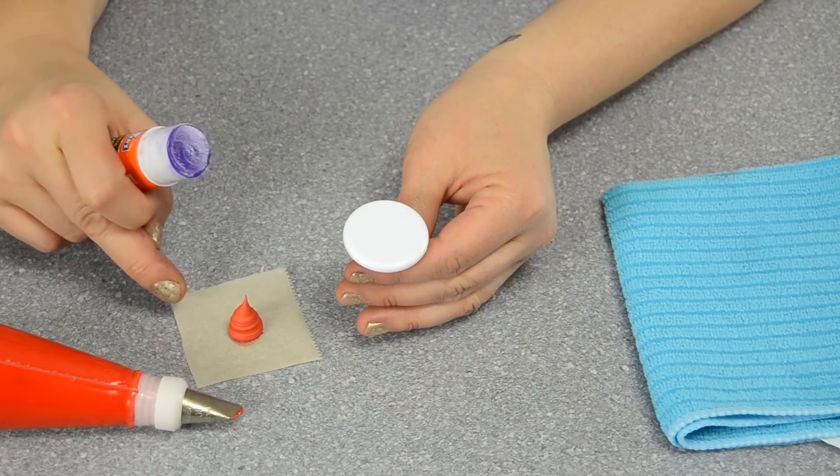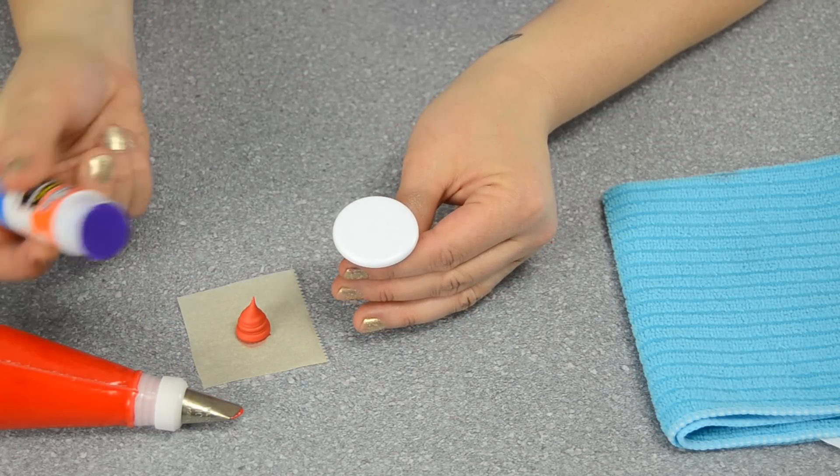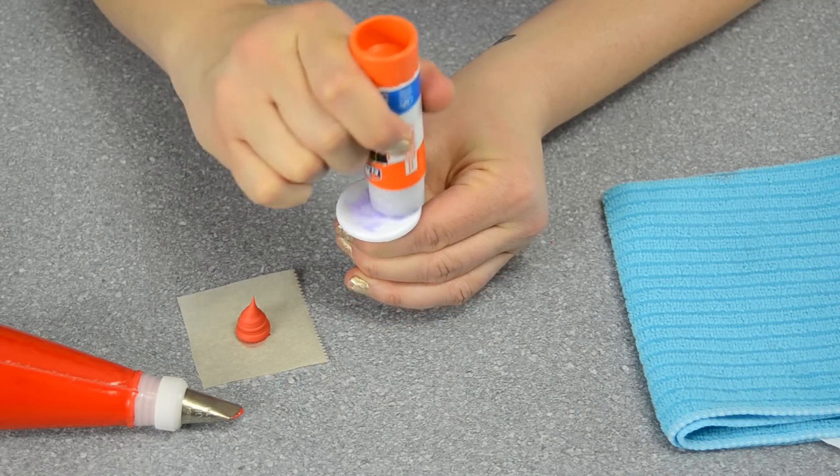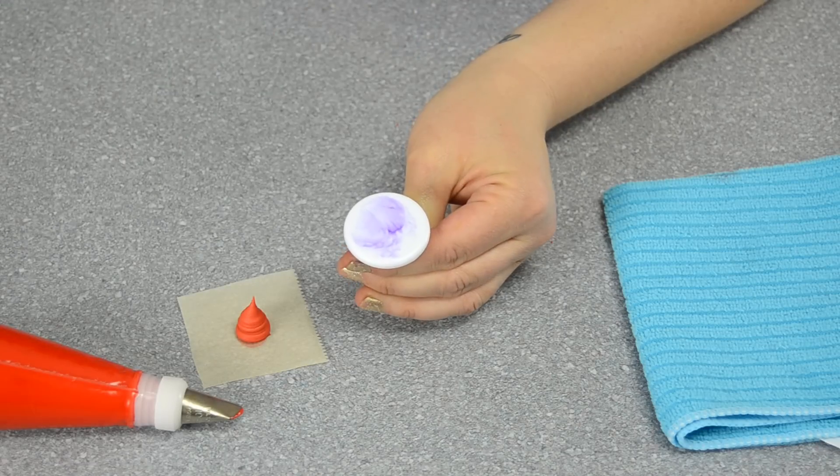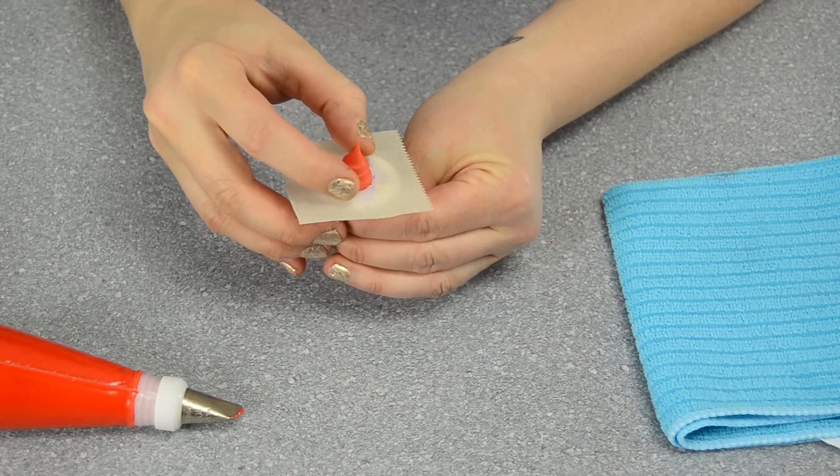To start out, you want to have your base with the parchment paper attached to your flower nail. What I find handy is to put on the non-toxic glue. I'm going to put enough so it sticks properly, and then just press it down. You want to have it right in the center.